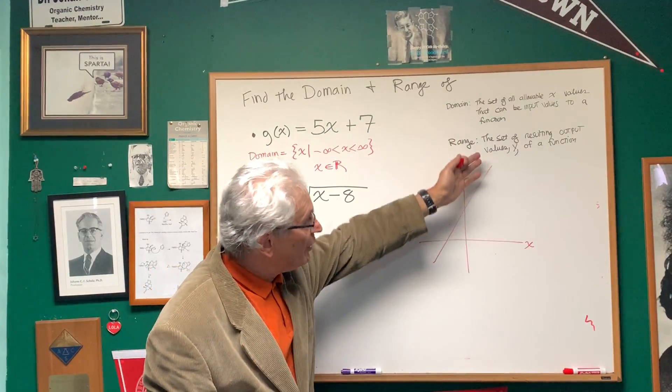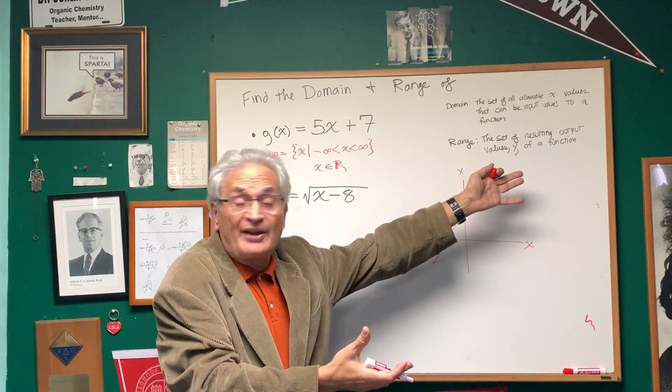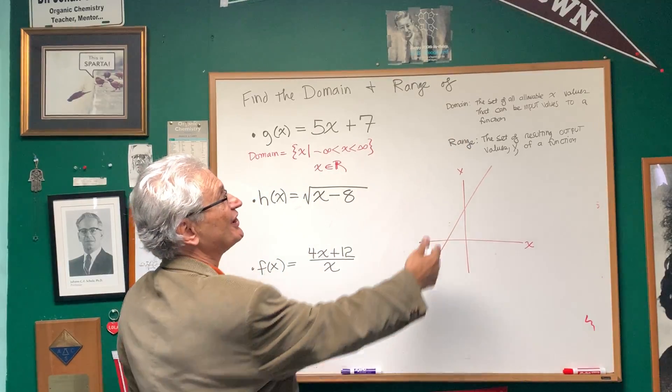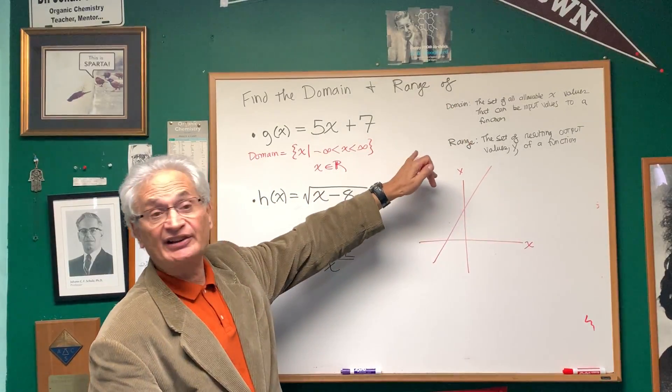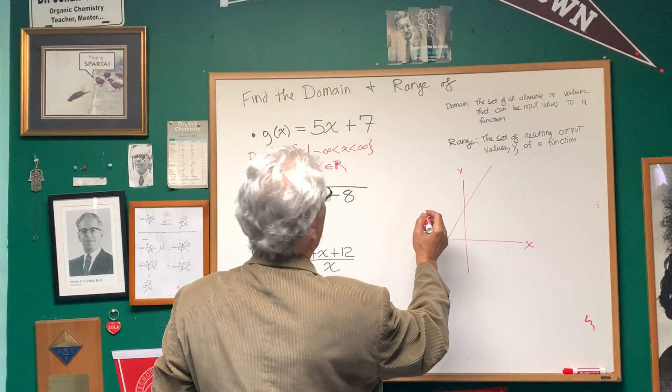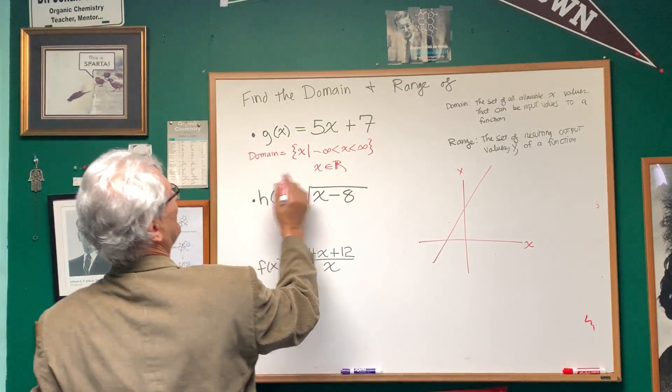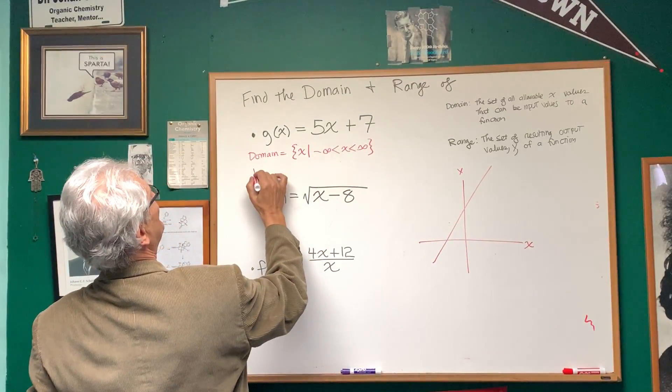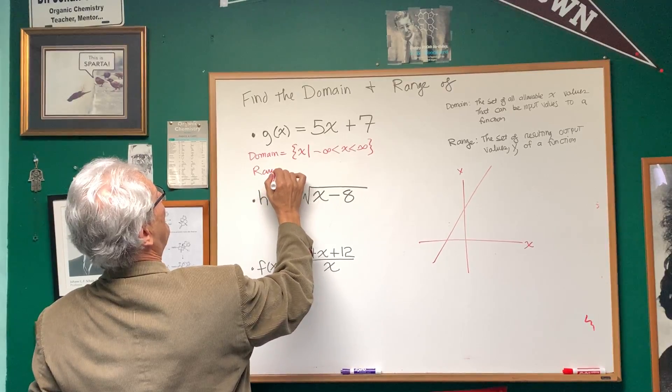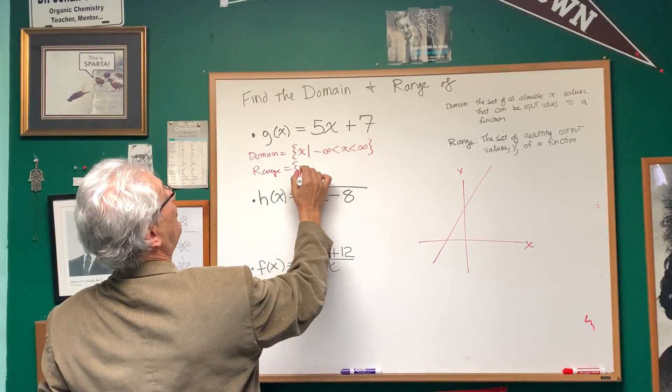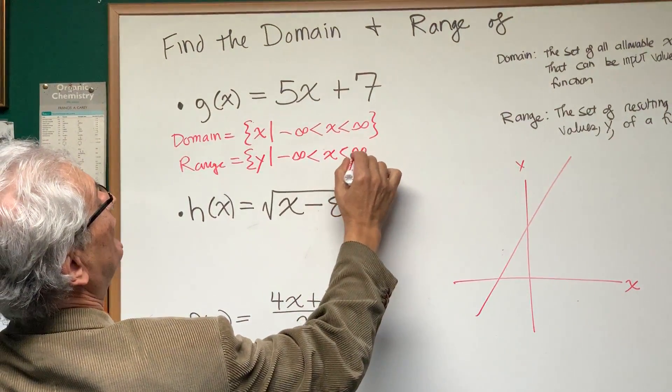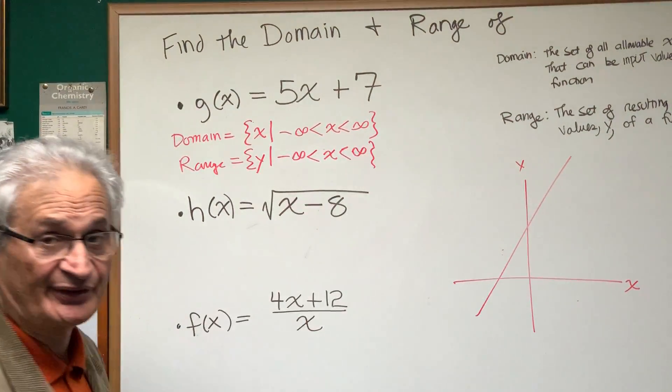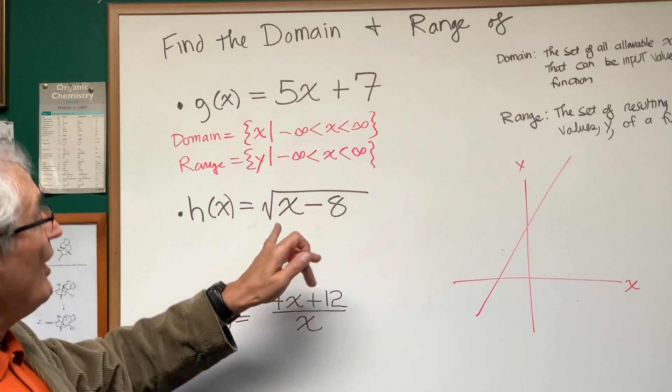Likewise, what is the resulting output of the y values? Well, there are none. You can see that the resulting y values are going to go from negative infinity to positive infinity. So the range is going to be the set of y values that are exactly the same, x going from negative infinity to positive infinity.